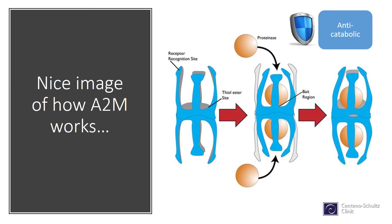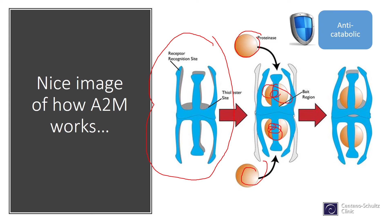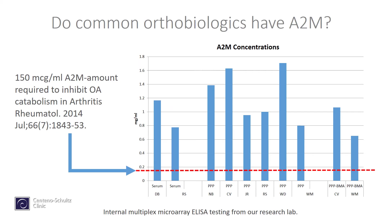Here's a nice image of how A2M works — this is what the molecule looks like. These are the breakdown bad guys, the proteinases. Literally, the molecule binds these proteinases and takes them out of action. We can see here what that finally looks like — it gives a nice visual of how A2M works. Now, the big question is: